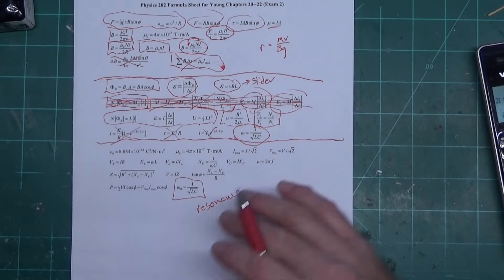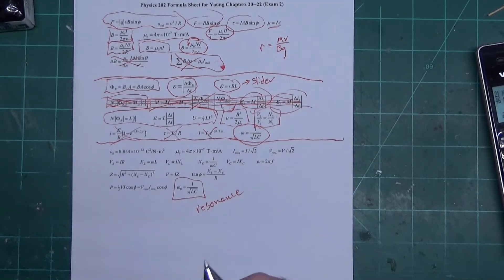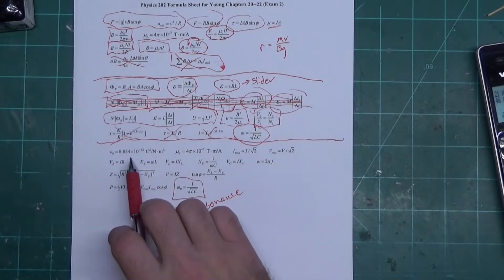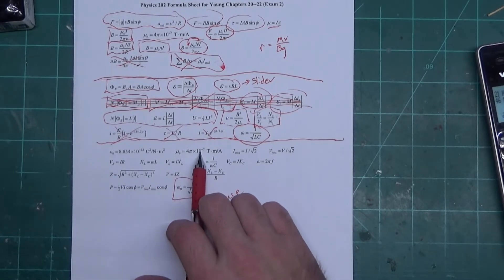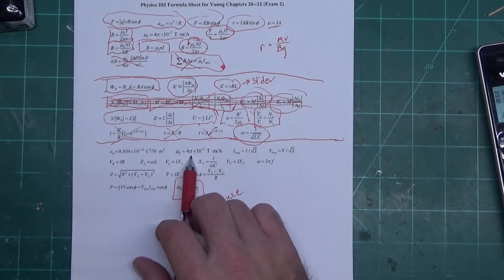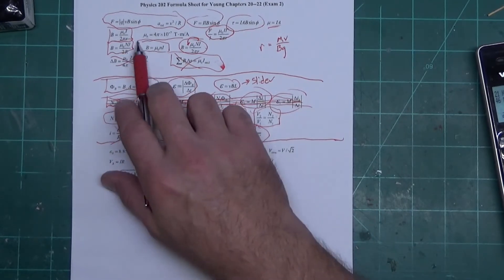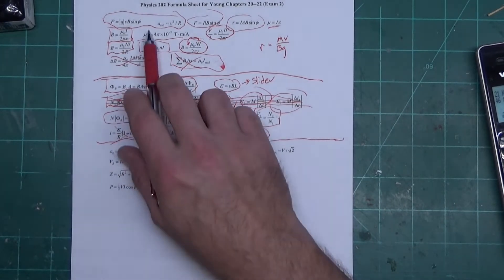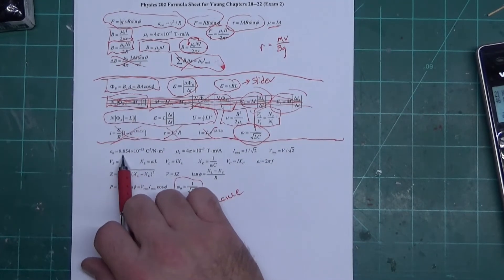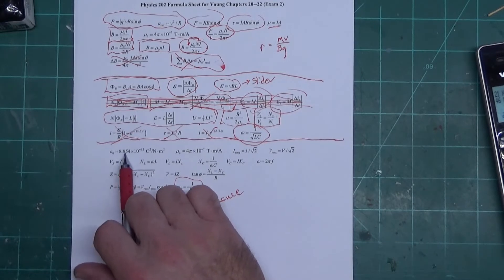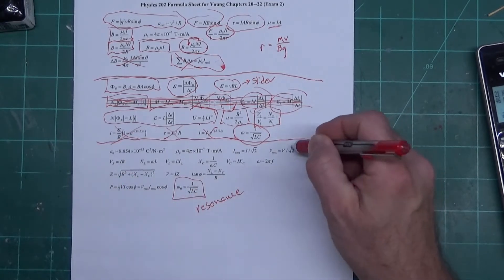Now getting down to the third chapter, AC circuits. These two don't really need to be here too much. Well, this one, if you don't know it, should be here - 4 pi times 10 to the negative 7 - but it's up there, so I don't know why it's duplicated. This one here we need on the second chapter, not this chapter. I mean on the third test, we'll need this on the third test.